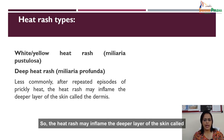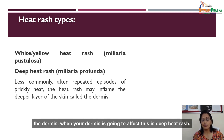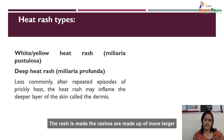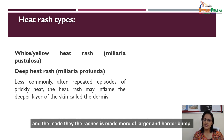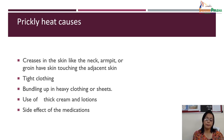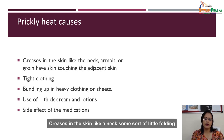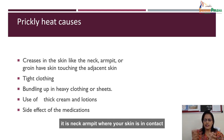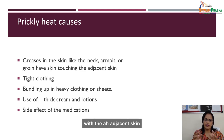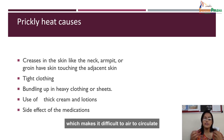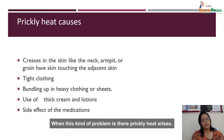In deep heat rash, the heat rash may inflame the deeper layer of the skin called the dermis. When your dermis is affected, this is deep heat rash, and the rashes are made up of larger and harder bumps. Moving to the causes of prickly heat: creases in the skin like the neck and armpits, where your skin is in contact with adjacent skin, makes it difficult for air to circulate and prevents sweat evaporation, which causes prickly heat to arise.